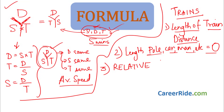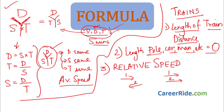Relative speed means speed of one object in relation to another object. Whenever a train is traveling at 40 kilometers per hour, we are saying that speed in relation to a stationary object — like a person standing on a platform. But when we say relative speed, we are talking about two moving objects — one moving this way and the other moving in the opposite direction or in the same direction. When we find speed in relation to another moving object, we call it relative speed.